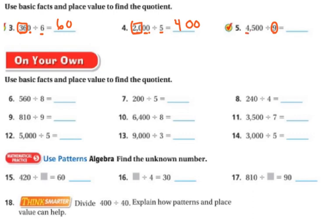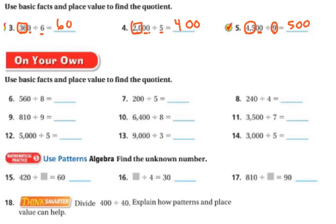Identify my basic facts: 9 and 45. What times 9 equals 45? That's 5, because 5 times 9 is 45. I have two zeros, so there will be two zeros in my answer — this is 45 hundreds divided by 9, giving five hundreds, so the answer is 500. Next, my basic facts are 56 and 8. I have one zero, so one zero in my answer. Since 8 times 7 is 56, the answer is 70.